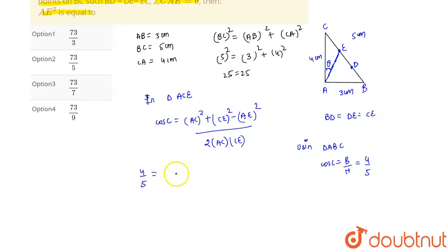Now AC is given as 4 cm, so it's 4 square plus, now CE is, here D and E divide line BC in 3 equal parts, so our CE becomes equal to 5 by 3. So CE is 5 by 3 whole square minus AE whole square divided by 2 into AC is 4 and CE is 5 by 3.